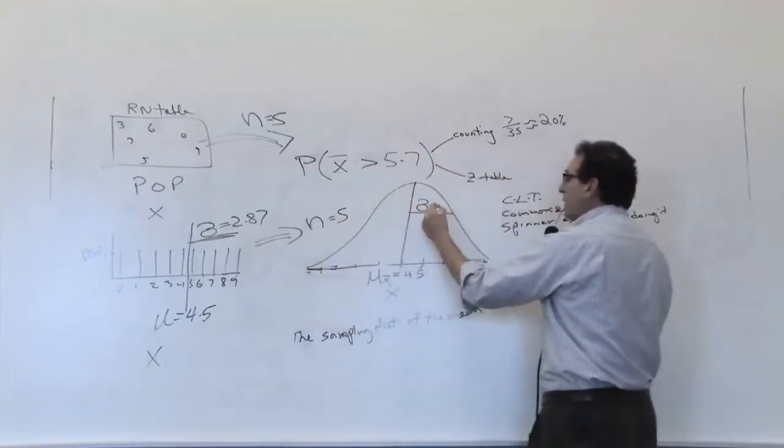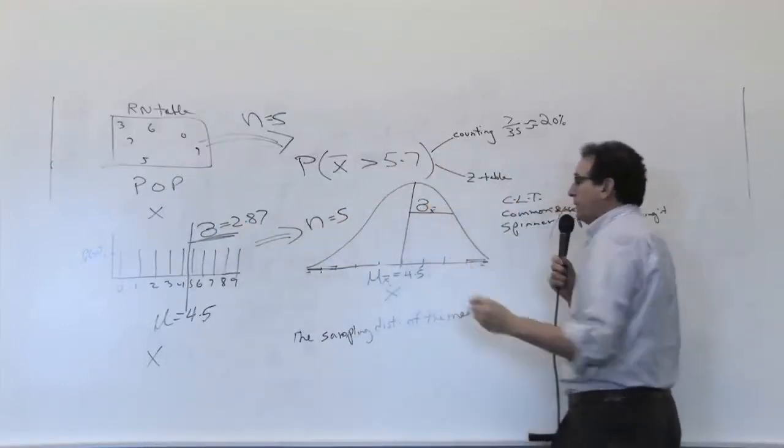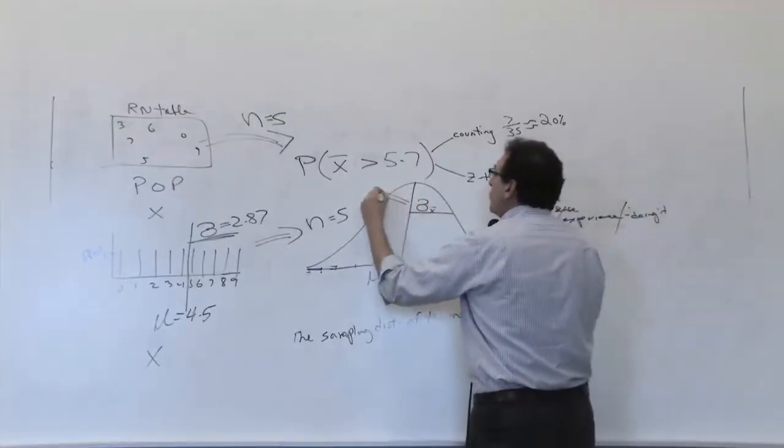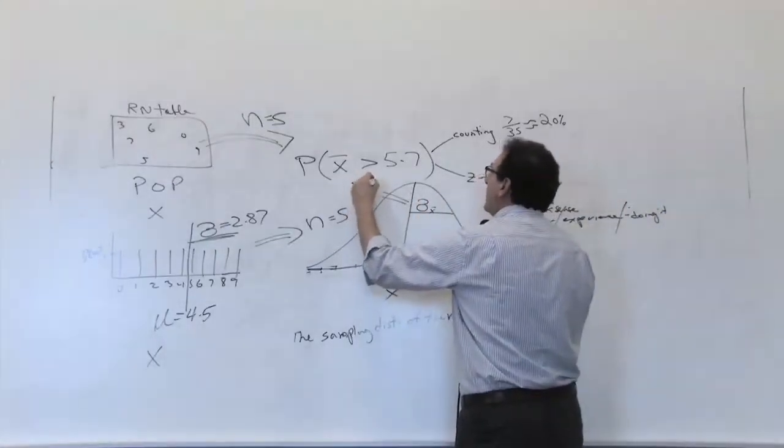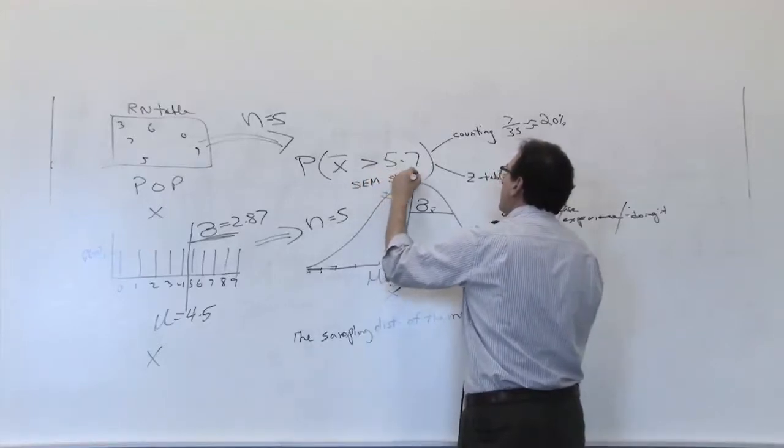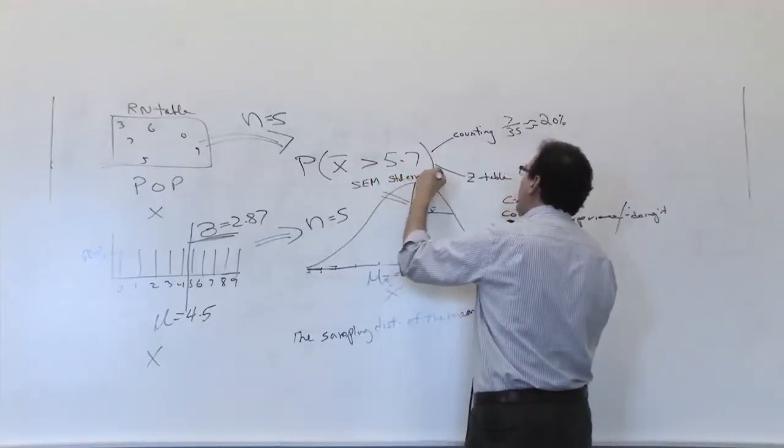This sigma with this sigma, so we give it a subscript, sigma sub x bar, and this has a special name. It's called the SEM, which stands for the Standard Error of the Mean.